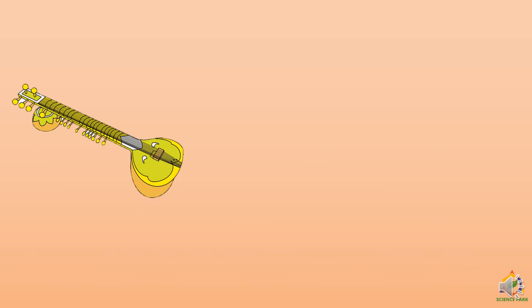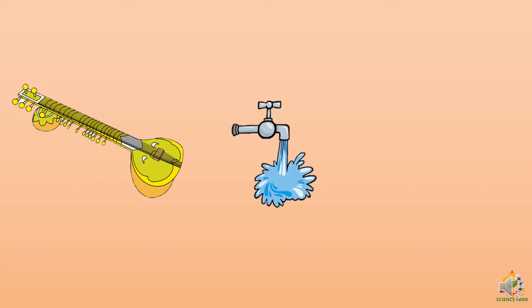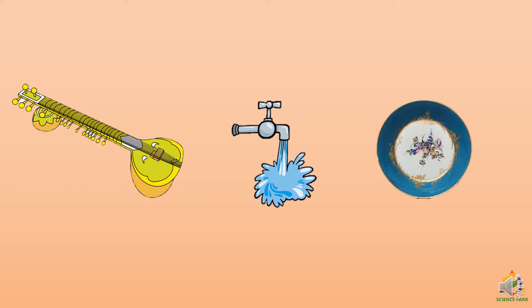Now let's look at some pictures. You see a sitar, water falling from a tap, and a saucer being thrown to the ground so that it breaks. In each of these three cases — plucking a sitar string, water falling from a tap, and a saucer breaking — you hear different sounds. Since anything that produces sound involves something vibrating, what exactly vibrates in each of these three cases?